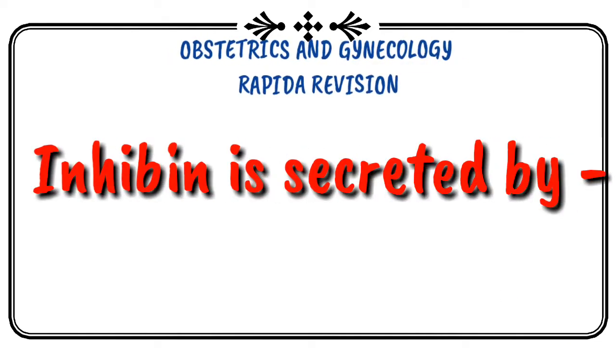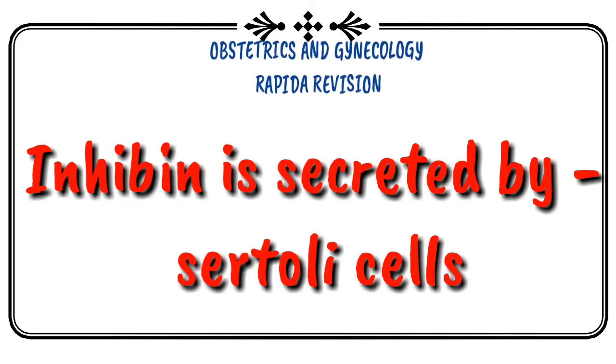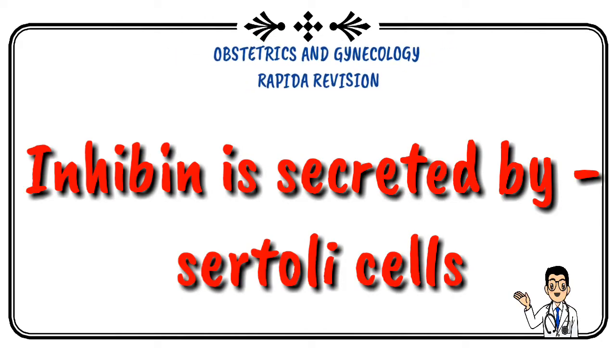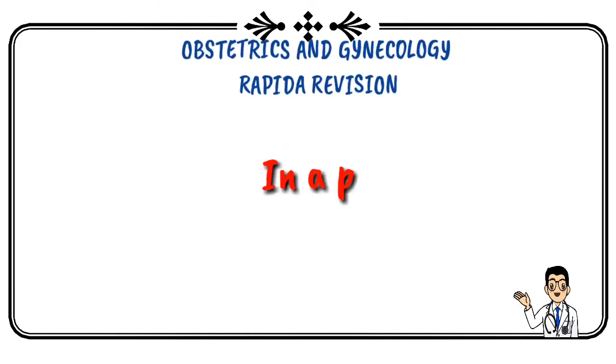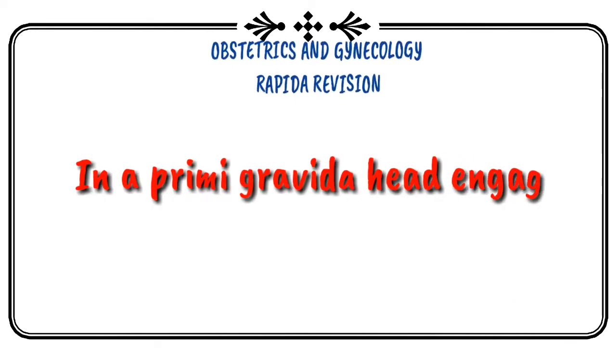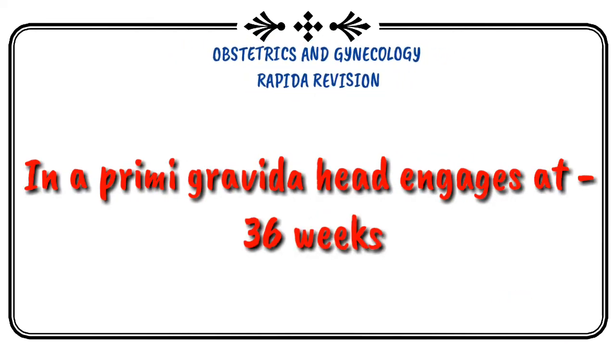Inhibin is secreted by Sertoli cells. Primigravida gets engaged at 36 weeks of pregnancy.